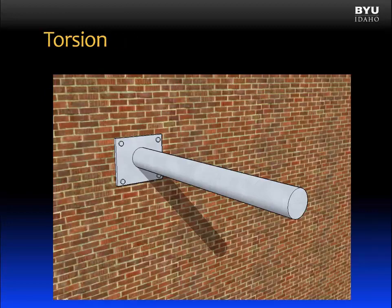Let's begin by first identifying what a torsionally loaded structure is. Here is a structural member. We will refer to this as a shaft, and the reason we will call it a shaft has everything to do with the way it is loaded. It is a shaft because we are going to apply a torque here to the end of the shaft. Once the torque is applied, it is now a torsionally loaded structure.